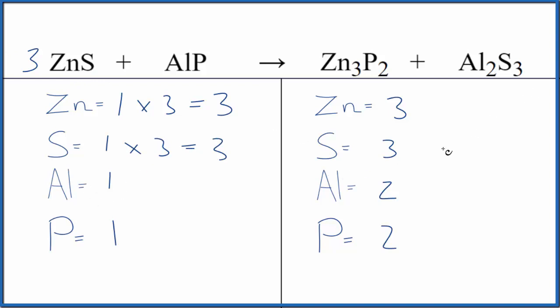And then for the aluminum and the phosphorus, we'll put a coefficient of two. One times two gives us two of those. One times two, two of those. They're balanced. We're done. This equation is balanced.